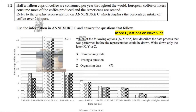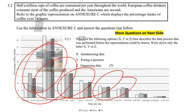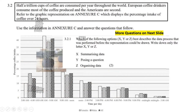This question says: half a trillion cups of coffee are consumed per year throughout the world. European coffee drinkers consume most of the coffee produced, and the Americans are second. Refer to the graphic representation on Annexure C, which displays the percentage. If you look carefully at the bottom, we've got females, males, and all. These are the time slots — 6 till 9, 9 till 12, 12 till 3, 3 till 6, 6 till 9, 9 till midnight, and midnight until 3 o'clock.